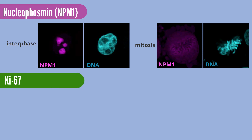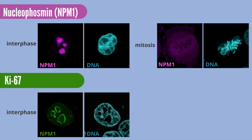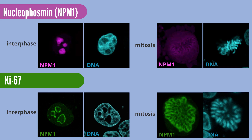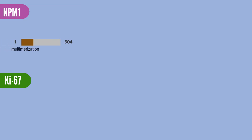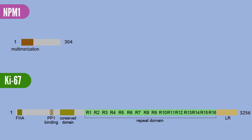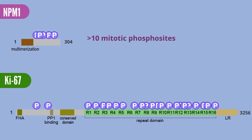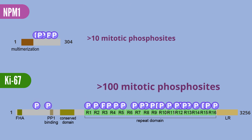Ki67 exists in the perinucleolar chromosomal regions in interphase, and forms a liquid-like phase on the chromosome surface upon the entry of mitosis. Both NPM1 and Ki67 are IDR-rich proteins, and our phosphoproteomic analyses identified more than 10 residues in NPM1 and more than 100 in Ki67, which are phosphorylated upon the entry of mitosis.